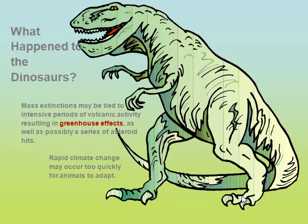Organisms live in an environment because it contains everything they need to live and grow. Each organism has adaptations that help it survive. When habitats change, organisms that live there are affected. Some of the organisms can adjust, but others cannot. Significant changes in the atmosphere that occur quickly result in devastating effects when plants and animals don't have time to adapt to the changes.